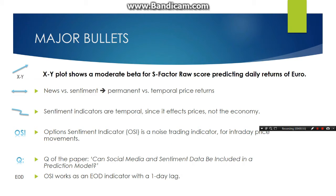The next major point is the distinction between news and sentiment: news produces permanent returns, whereas sentiment produces temporary returns. That's somewhat intuitive, and research does support that intuition. The sentiment indicators that we focus on in this research are temporary in nature, creating temporary returns since they affect prices and not the underlying economy.